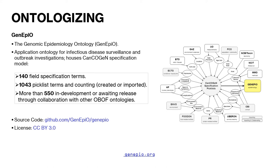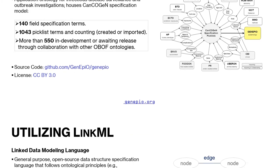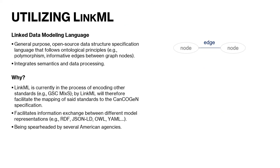We have 140 field specification terms, over a thousand pick list terms and counting, which we've either created or imported from other ontologies, and then 550 that are in development or waiting to be released because we're working in collaboration with other OBO domain ontologies to avoid redundancies in terminology.